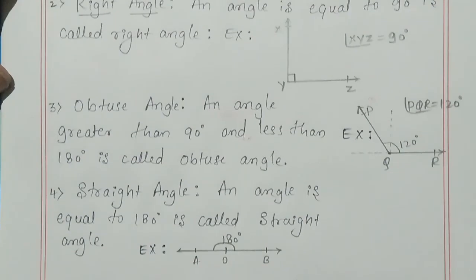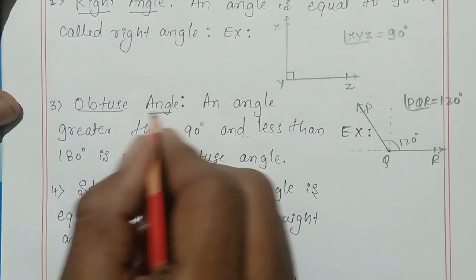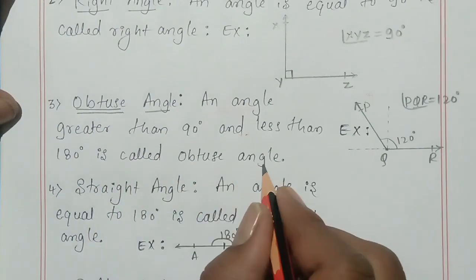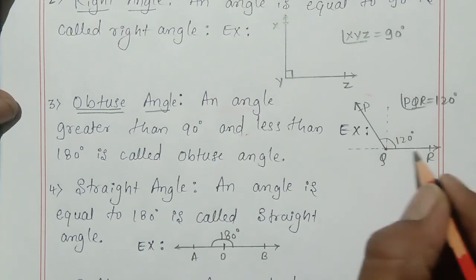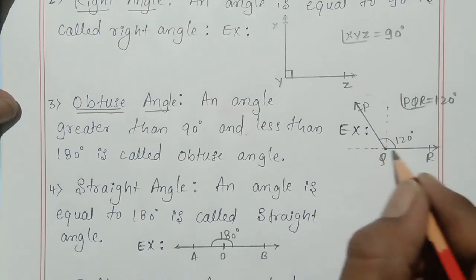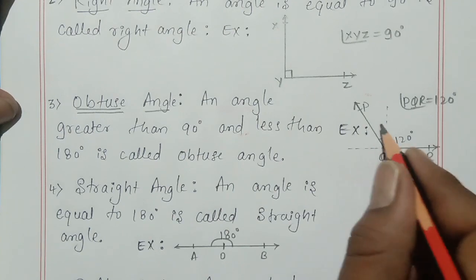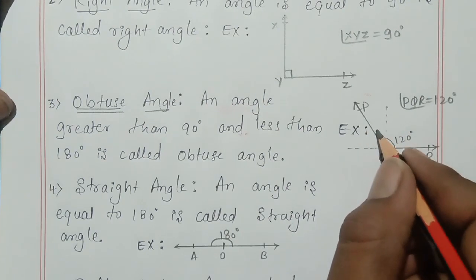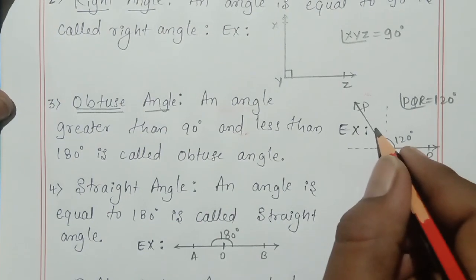The third one is obtuse angle. An obtuse angle means an angle greater than 90 degrees and less than 180 degrees. This is 90 degrees and this is 180 degrees. Greater than 90 and less than 180 — all angles in this region are obtuse angles. For example, 120 degrees is also an example of an obtuse angle.